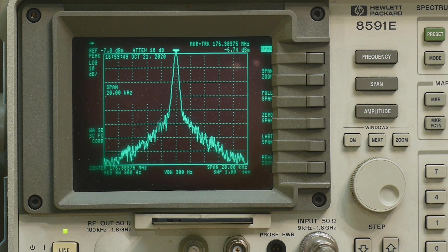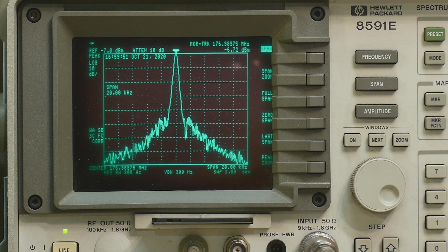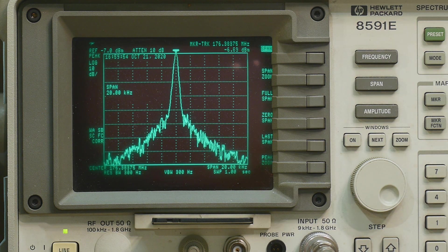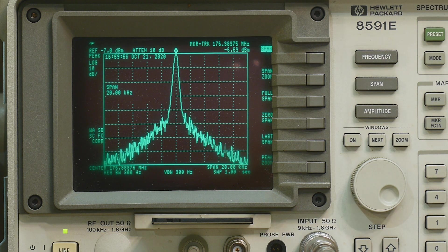So 10 kilohertz, each division is two kilohertz. So two kilohertz is down at 10, 20, 30, 40, 50 dB. Yeah, it's pretty good. It's a pretty nice little oscillator.